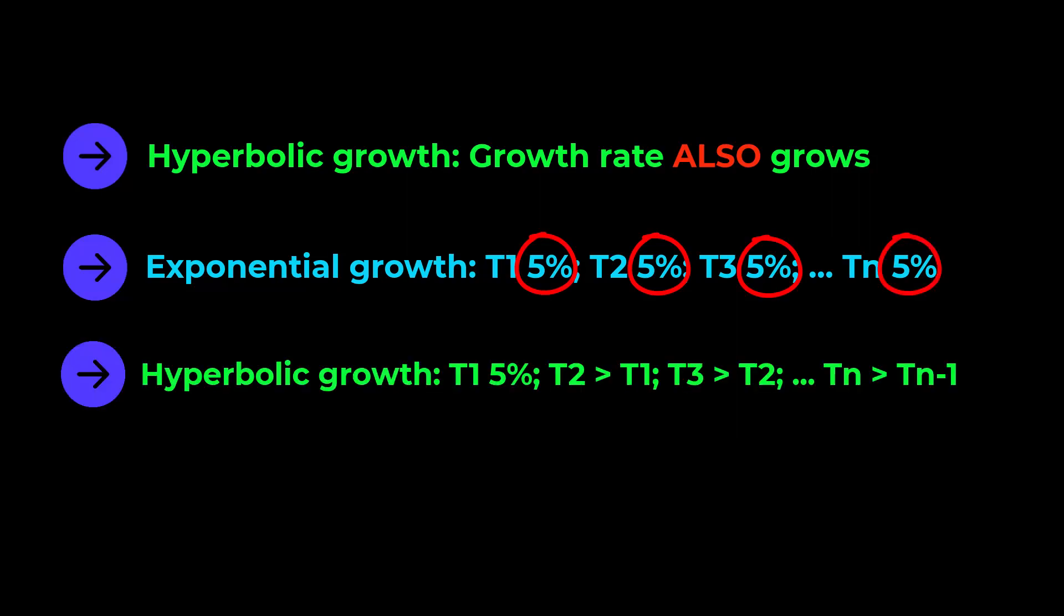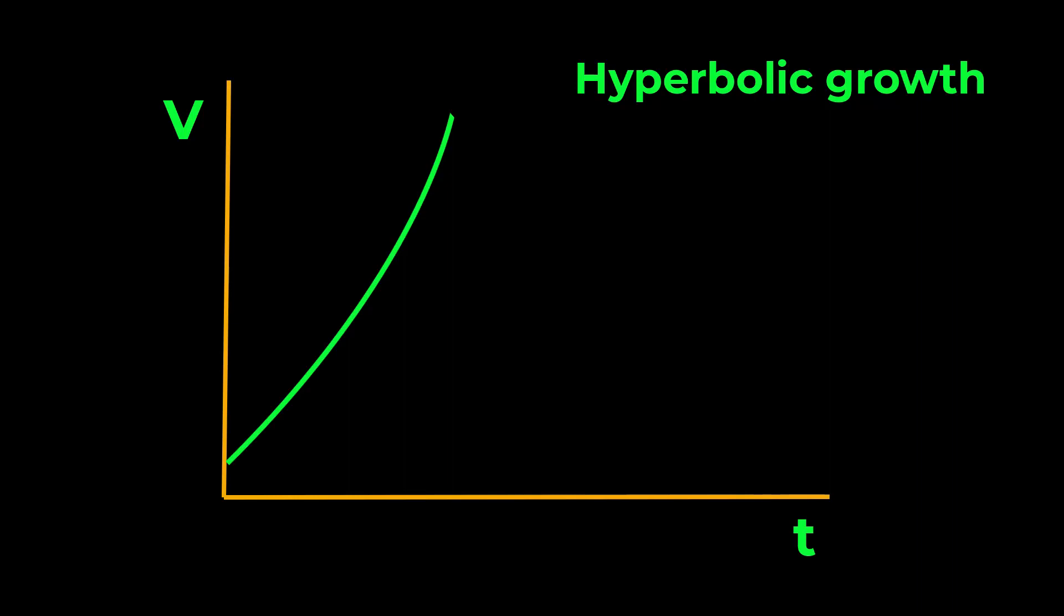In hyperbolic growth, 5% growth in one period is followed by a higher percentage increase in the next period and an even higher growth rate in the period after that, and so on. Therefore, in hyperbolic growth, there is a double feedback loop, and the growth rate itself increases with each passing time period.